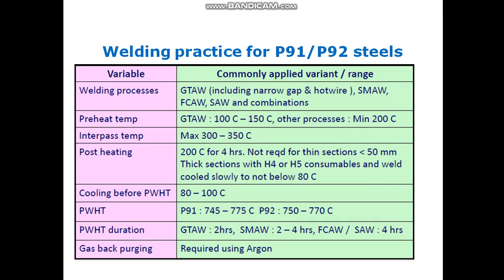A table gives welding practices for P91 and P92 steels. Applicable processes include all GTAW variants (narrow gap, hot wire), SMAW, FCAW, and SAW. Preheat temperature for GTAW is 100–150°C; for other processes it is minimum 200°C. Interpass temperature maximum is 300–350°C. A pause setting of 200°C for four hours is recommended, not required for sections less than 50 mm with H4/H5 consumables. Weld cool slowly to not below 80°C.